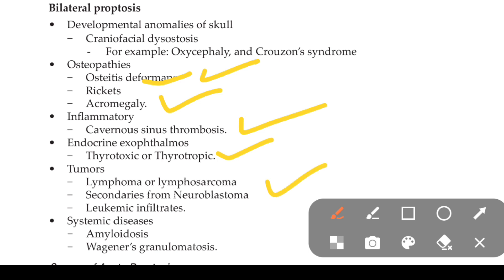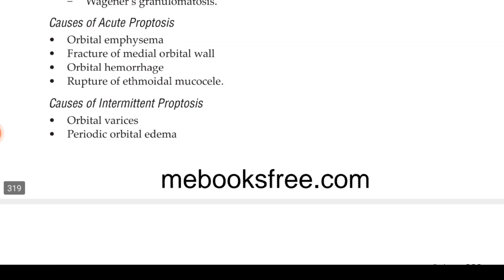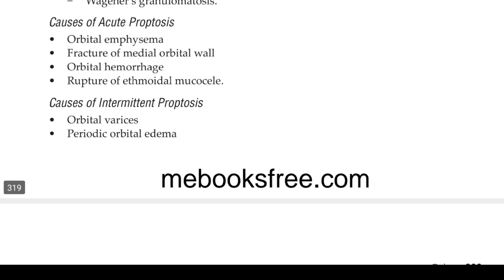Infiltrative systemic diseases like amyloidosis — abnormal protein deposition — and Wegener's granulomatosis. Causes of acute proptosis include orbital emphysema, fracture of the medial orbital wall, orbital hemorrhage, and rupture of ethmoidal mucocele. Causes of intermittent proptosis — which come and go — include orbital varices, periodic orbital edema, recurrent orbital hemorrhage, and highly vascular tumors.